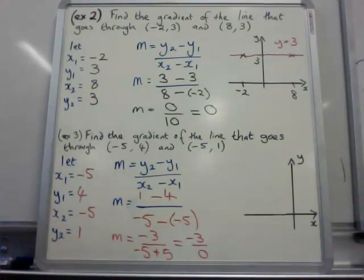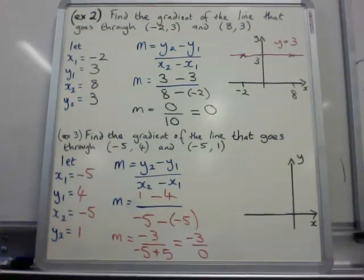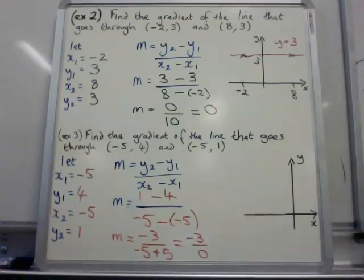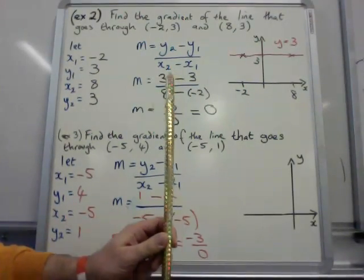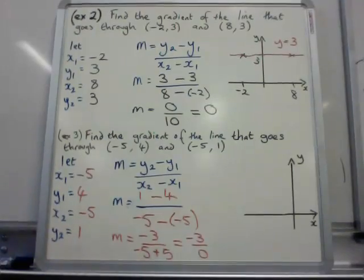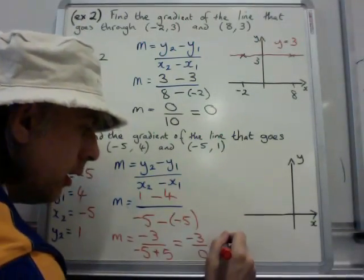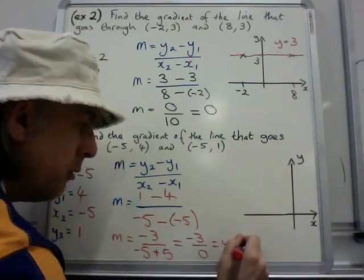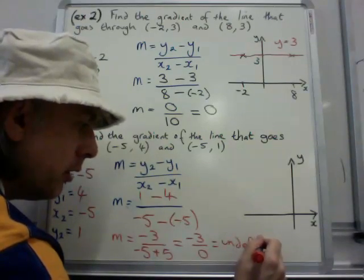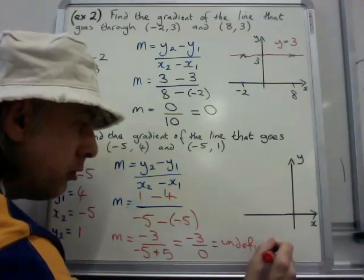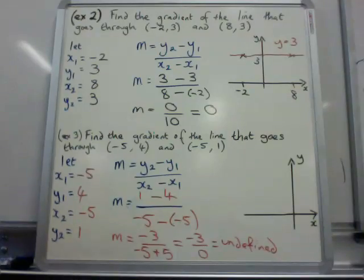Now, what do we do at this point? Well, you should know that you can't divide anything by 0. So if there's no number that exists, this is our old friend the undefined line. Do you remember it? You may feel a little bit confused, so let's draw a graph to make it a little bit clearer.